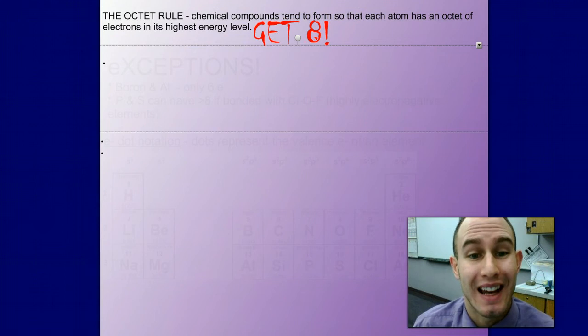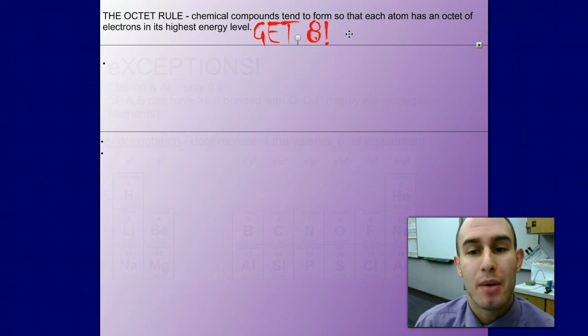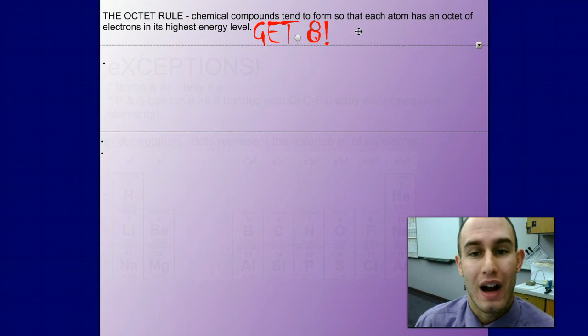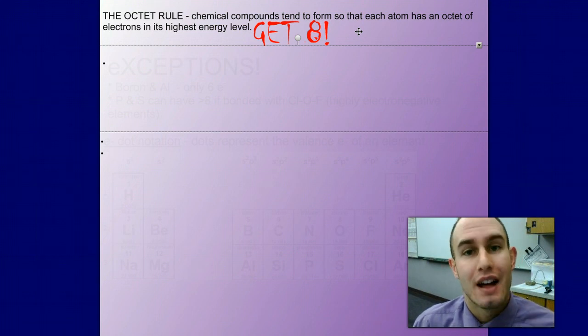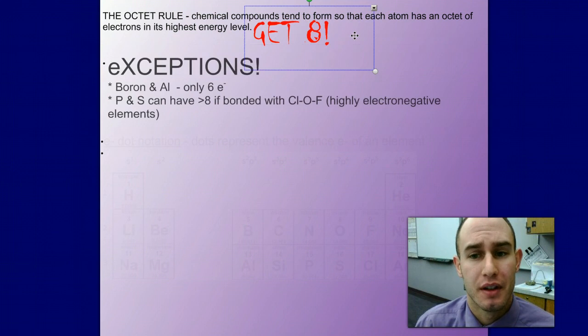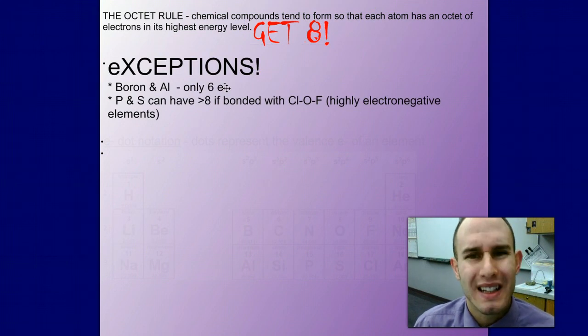Next I want to talk about the octet rule and this is really getting into drawing Lewis structures. The octet rule, write this down, compounds want to get eight. That is all you need to know, get eight. They are going to get eight electrons around their nucleus, that is most stable for that compound. There are a few exceptions, boron and aluminum.